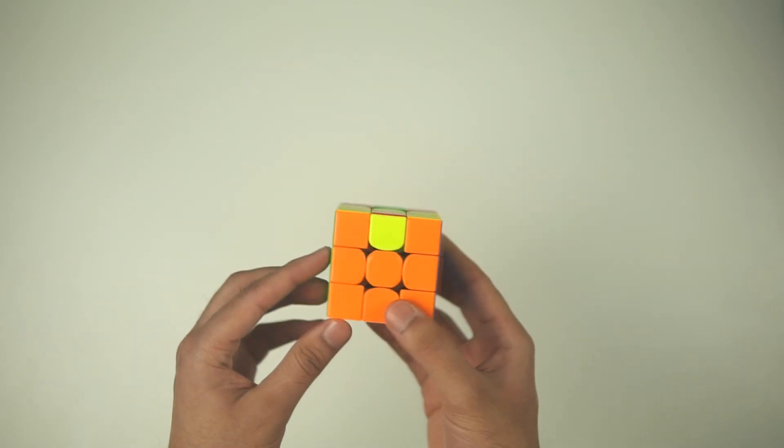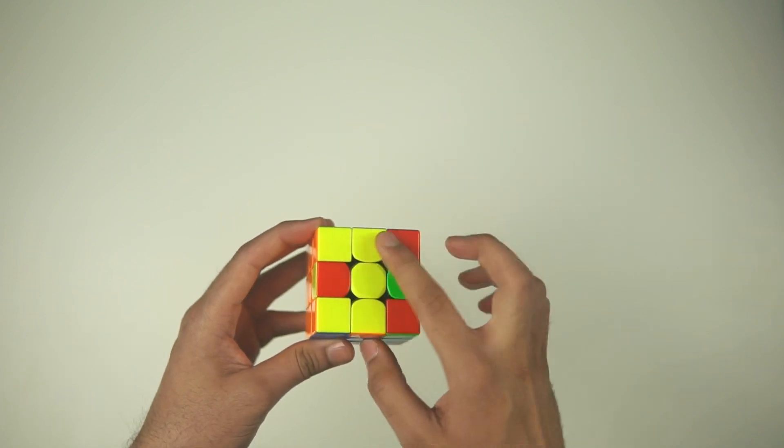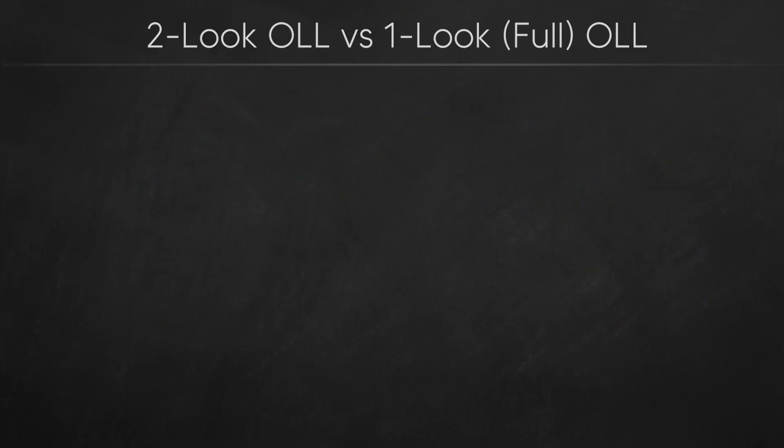OLL is the third step of CFOP where we orient the last layer pieces so that the top face is the same color. Full OLL, which is also called one-look OLL, has 57 different cases with a different algorithm for each one.